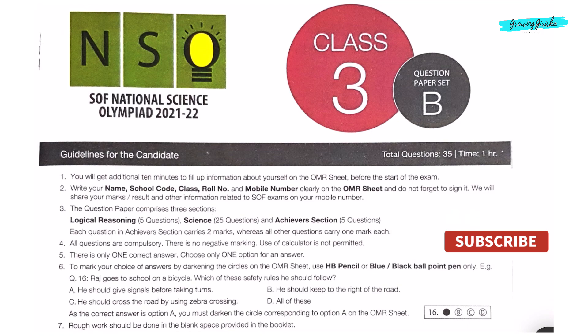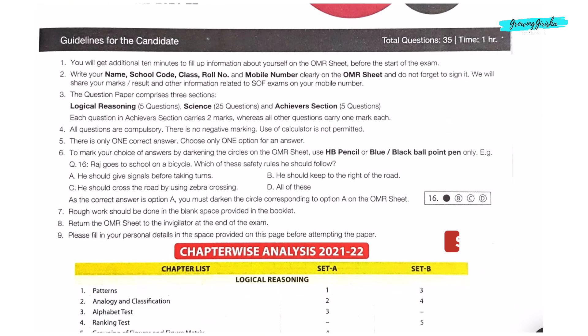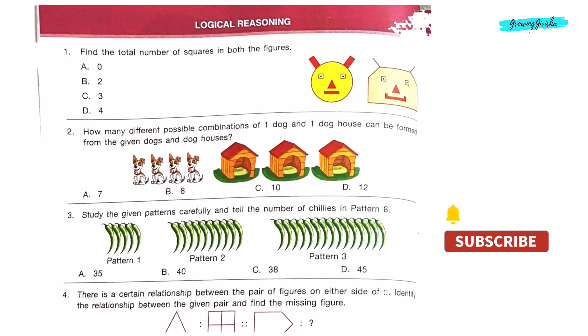National Science Olympiad set B21-22 for class 3. Logical Reasoning Question 1: Find the total number of squares in both the figures. In the first figure there are 2 squares, and in the second figure there are 2 squares again. So for total number of squares we will add them: 2 plus 2 is 4. Option D is the correct answer.